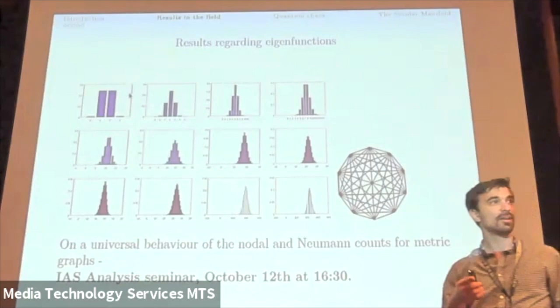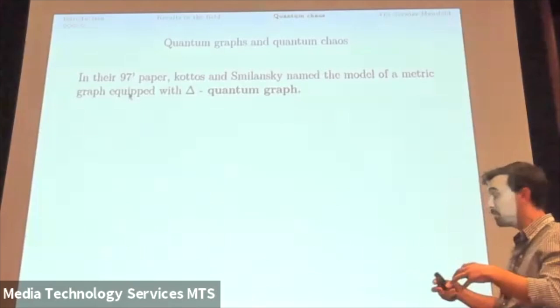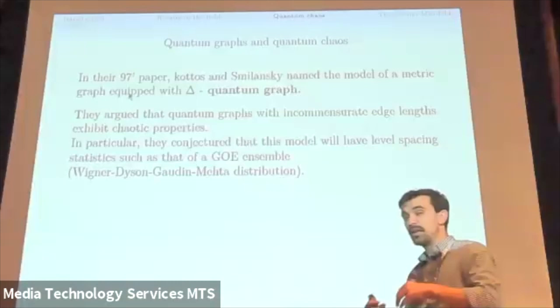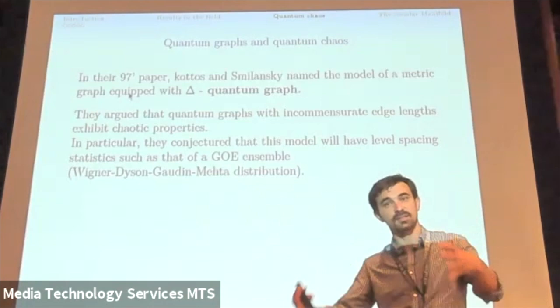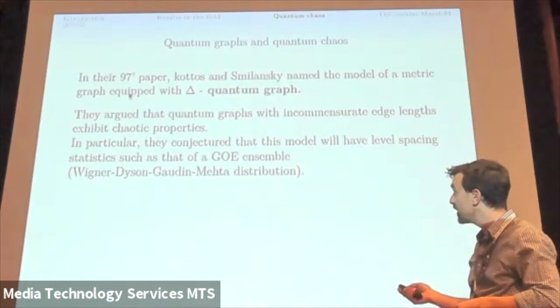So the next thing I want to talk about is quantum chaos, the relation to quantum chaos. So in their '97 paper, Kottos and Smilansky named this model a quantum graph. And they argued that quantum graphs with incommensurate edge lengths exhibit chaotic properties. In specific, they talked about the level spacing statistics. They said that the level spacing statistics is going to be the level spacing statistics of the random matrices from a GOE ensemble in the limit that the metrics go to infinity.